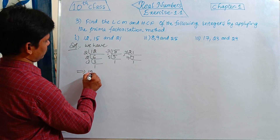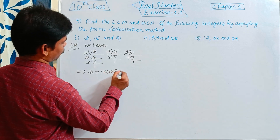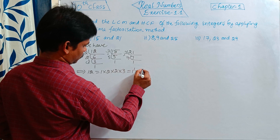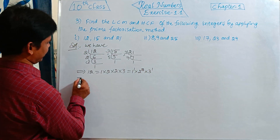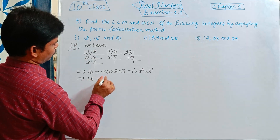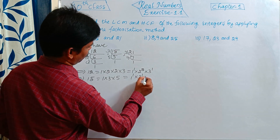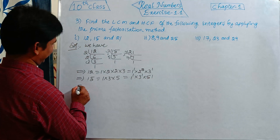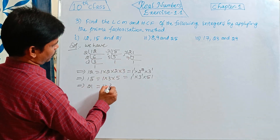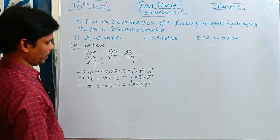So write the factors of 12: 1 × 2 × 2 × 3, that is equal to 1¹ × 2² × 3¹. Next, 15: 1 × 3 × 5, that is equal to 1¹ × 3¹ × 5¹. Next, 21: 1 × 3 × 7, so 1¹ × 3¹ × 7¹.